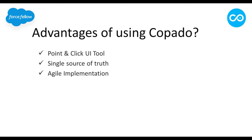Next we have agile implementation. In Copado you can work in an agile manner — they have built-in functionalities like creating user stories, epics, sprints, and all related things. Or you can also integrate third-party agile applications like Jira, Azure DevOps, and many others.